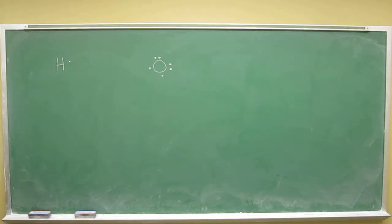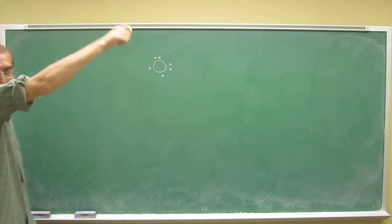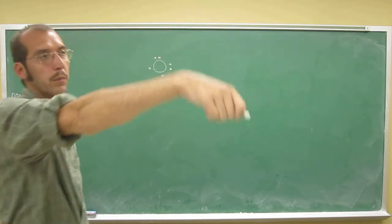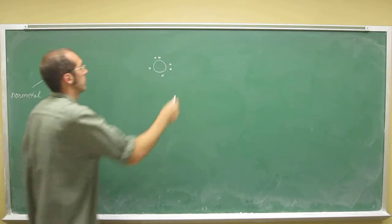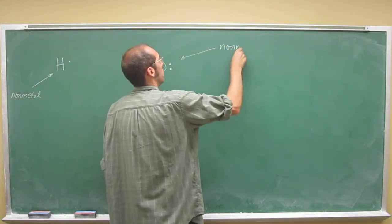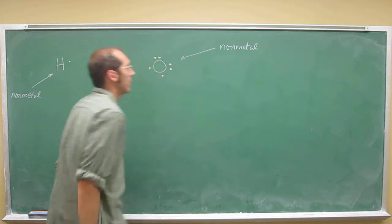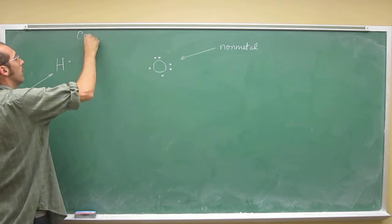So what are these elements? Hydrogen is a nonmetal. It can be like a group one or a group 17 element. In this case, it acts like a group 17 element. And oxygen, of course, is a nonmetal as well. So when we have two nonmetals come together, what do we form? We form a covalent bond.